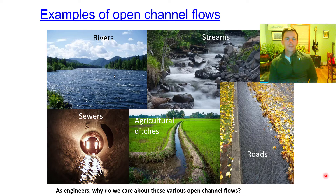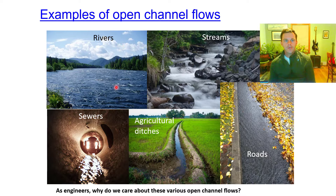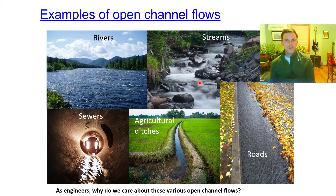Here we have a couple of different open channel flows that we think about as engineers: rivers and streams. Rivers are important because they can flood; they can also convey water away that has various types of water quality issues. Rivers and streams can have different substances in them that may be harmful or beneficial. You may be trying to restore a stream to have some natural function and to benefit the ecosystem and the surrounding area, maybe for recreation as well.